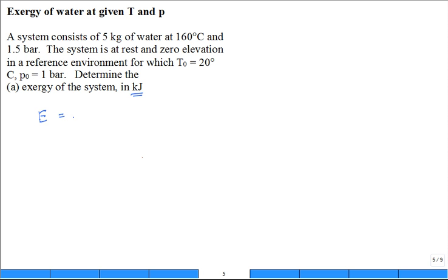Which is the mass times U minus U-naught for the first term, plus P-naught times V minus V-naught for the second group of terms, minus T-naught times S minus S-naught for the third group of terms, plus lowercase KE, lowercase PE, close bracket. Is that the correct equation?